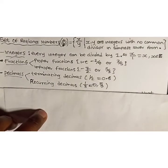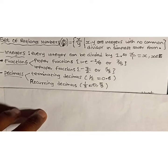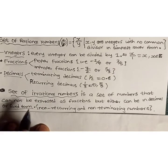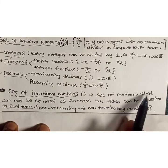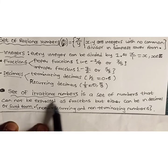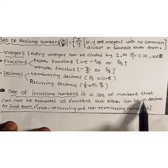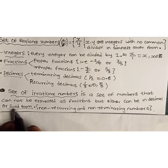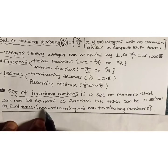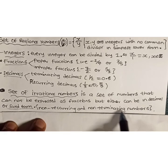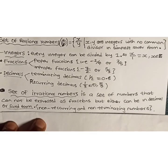Moving to the set of irrational numbers. This has nothing to do with rational numbers. The set of irrational numbers is a set of numbers that cannot be expressed as fractions, but can only be expressed in decimal or surd form. They are non-recurring and non-terminating numbers.